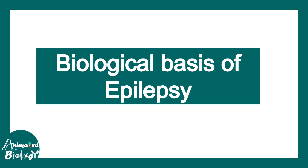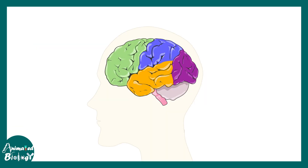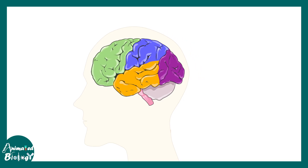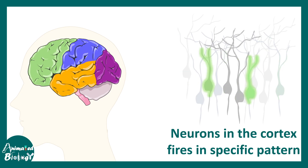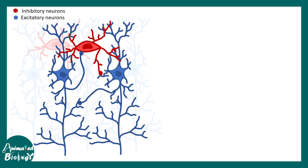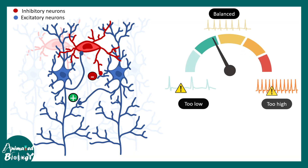The biological basis of epilepsy includes circuit imbalance. Inside our brain, neurons form neuronal circuits and the neurons in the cortex fire in a specific pattern. This pattern firing is important for information encoding. It is possible because there are inhibitory and excitatory neurons regulating the exact amount of activity. The red neuron is the inhibitory one and the blue neurons are the excitatory ones. This interplay between inhibitory and excitatory neurons keeps the activity in a steady-state baseline level — not too low and not too high.